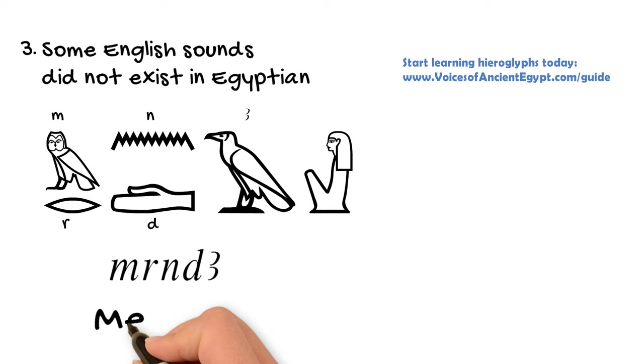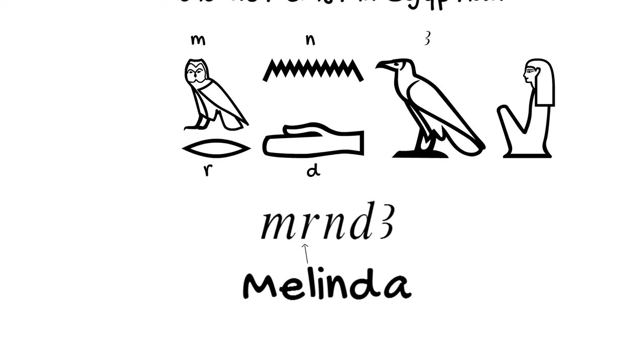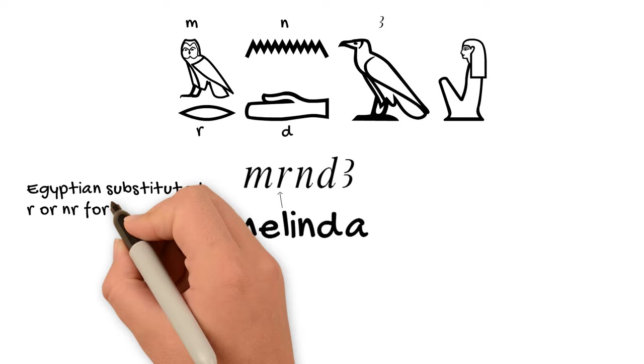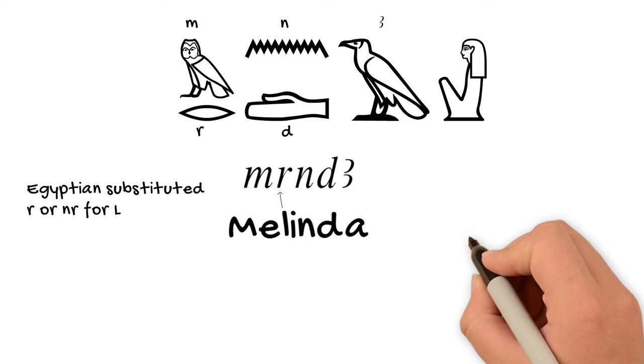So as you can see here, for the L in my name, I actually use an R. And that's because Egyptian didn't actually have an L sound in the language. And for most of Egyptian history, they used an R or sometimes an N and an R together to substitute for L when they had to write foreign names.